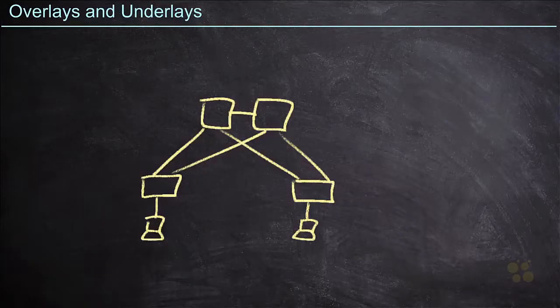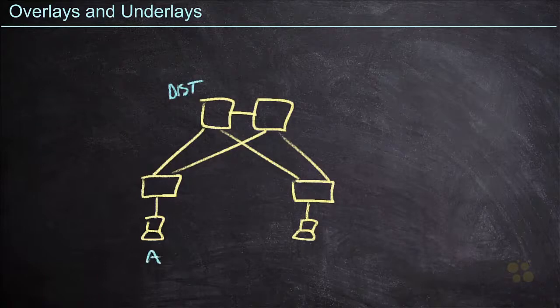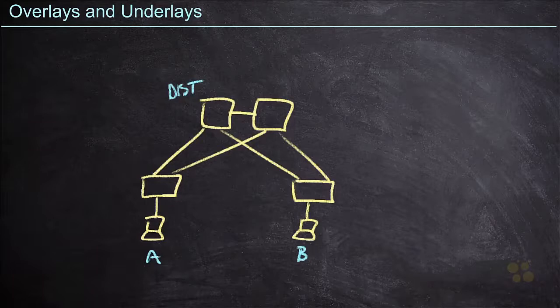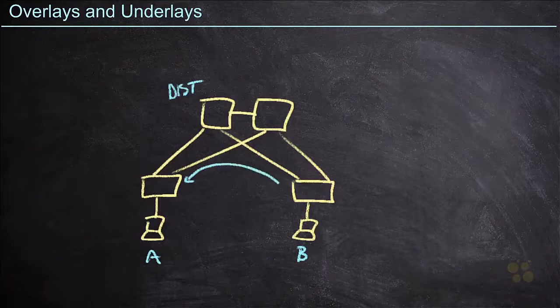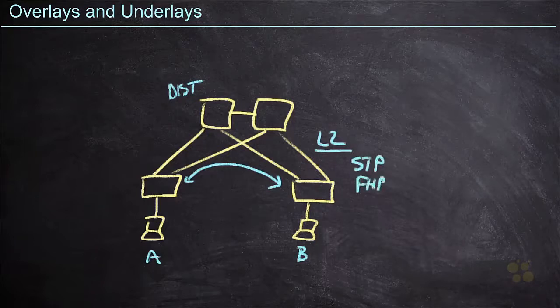In many cases, the physical design of our network can dictate what the logical configuration is going to look like. For example, we take a look at a traditional network here. This is kind of what we drew in the last video, how we have a distribution layer up here, and then we have client A and client B. And for whatever reason, these two clients need to be on the same subnet. Well, if we want them on the same subnet and therefore the same VLAN, we're going to have to extend layer two through this topology, which means that we're now creating a large layer two domain.